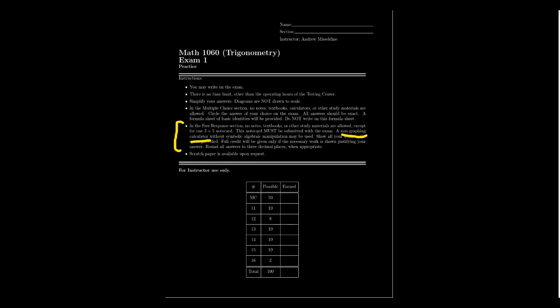In terms of notes, you will be allowed a single 3x5 note card — 3 inches by 5 inches, so 15 square inches of area. You can write front and back, as small as you want, but it must be handwritten. This note card is actually part of the exam — technically there are 16 questions, and the 16th question is your note card question. You'll get either 2 points or no points by turning in a valid note card. You can put whatever notes you want on it — trigonometric identities, formulas, examples, whatever you think is appropriate. It'll be stapled and turned in with your exam. It is 2 points out of 100.